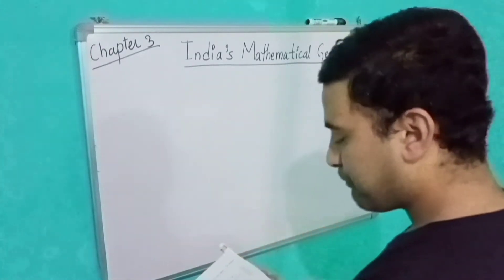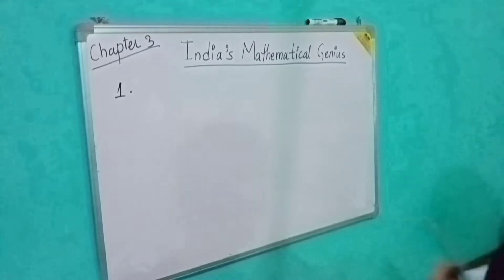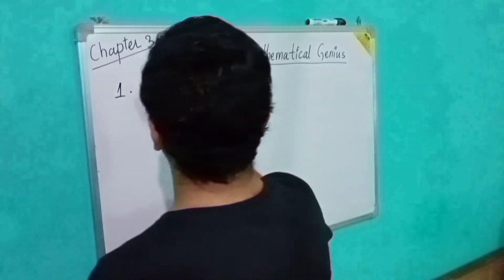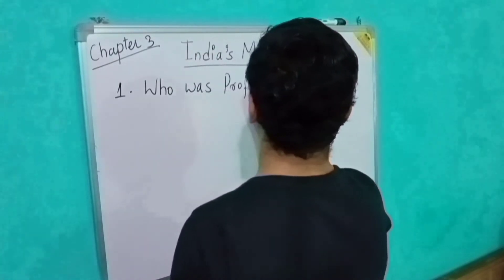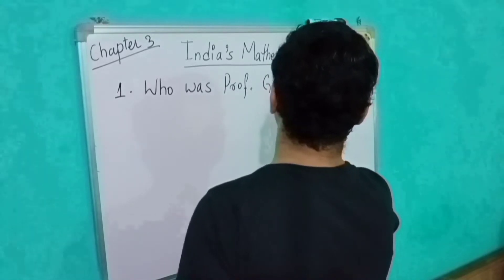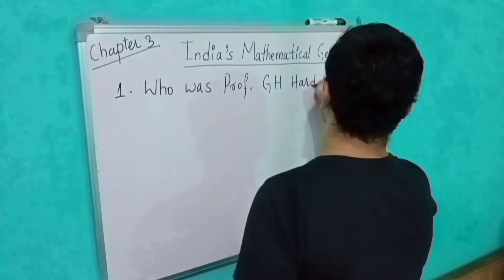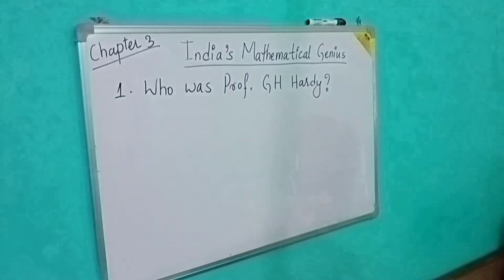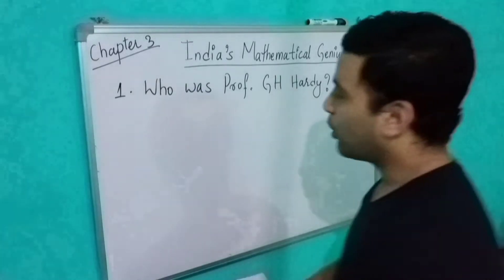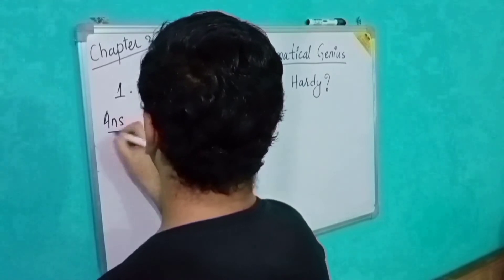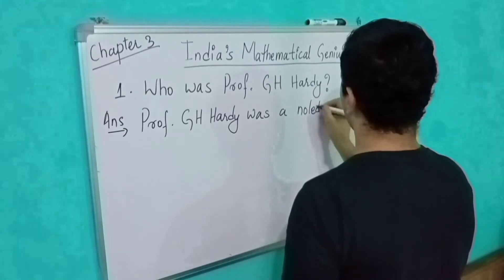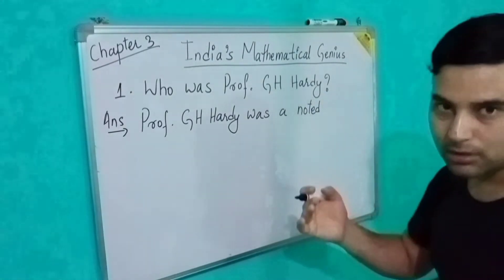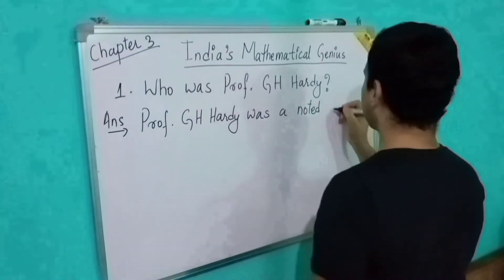So what is the first question? Who was Professor G.H. Hardy? Professor G.H. Hardy was a noted mathematician of Cambridge University. What is 'noted'? It means well-esteemed, renowned — Prashidhar. So, noted mathematician of Cambridge University.